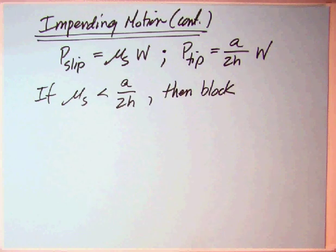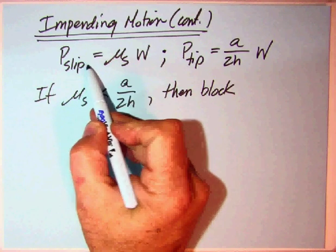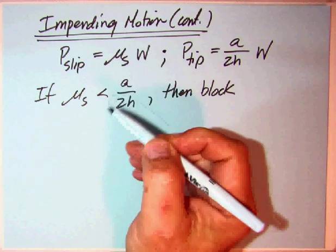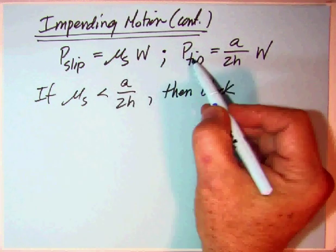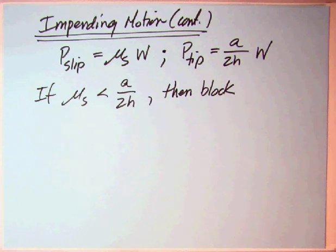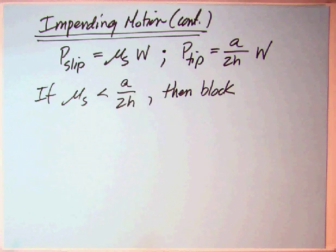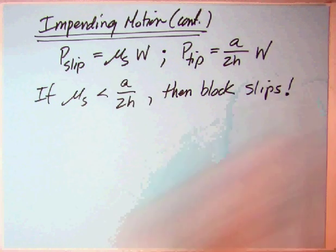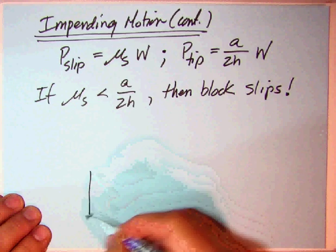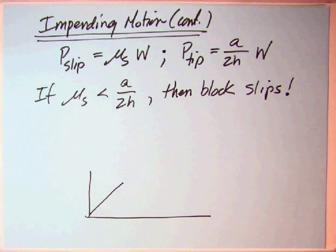For this particular problem, the block on the flat surface, P_slip we found out to be mu_s*w. And then P_tip we found was equal to A over 2H times W. Therefore, if mu_s is less than A over 2H, then the block slips, because that's what we get to first on that plot that we have here. Whatever you get to first happens, because it's going to match it one-to-one. Whichever is the lower value, that will happen first.